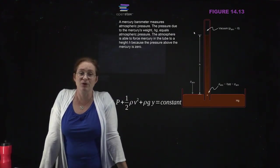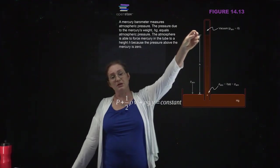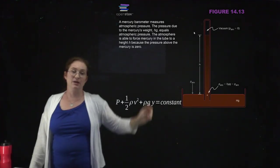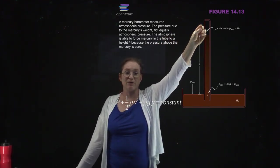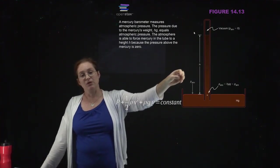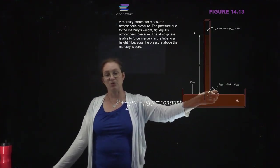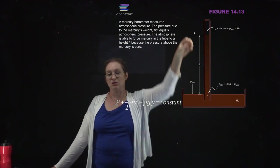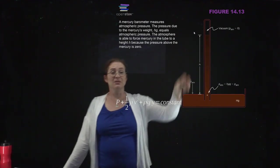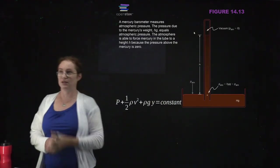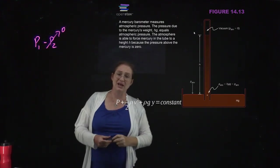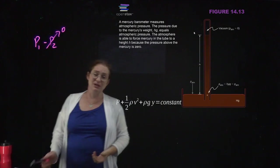In a mercury barometer, there is no air at the top. As the mercury falls, it evacuates part of the tube, and it falls until the atmospheric pressure on the mercury in the open container balances the weight of the mercury in the tube. In that case, P₂ is set equal to zero, so your gauge pressure is actually the atmospheric pressure.